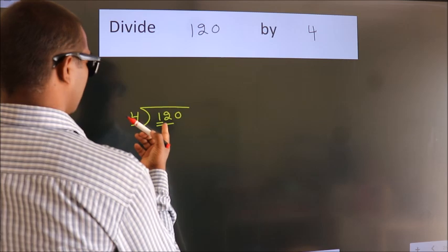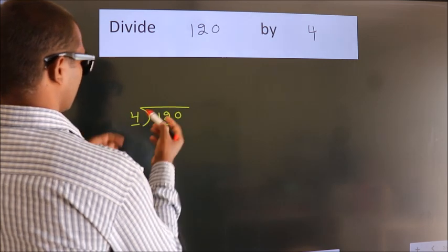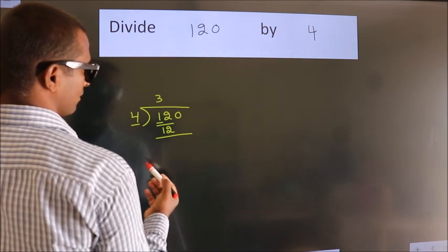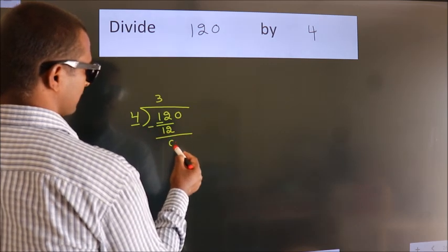When do we get 12? In the 4 table. 4 threes, 12. Now we should subtract. We get 0.